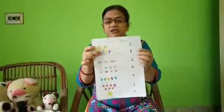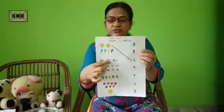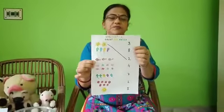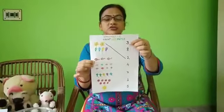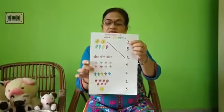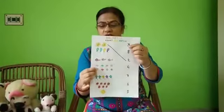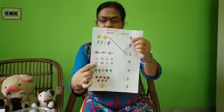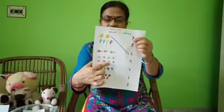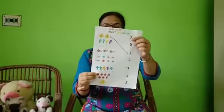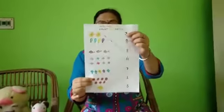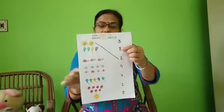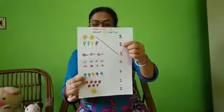Next, fish. One, two, three. Three fish. Then three is here. Next, stars. One, two, three, four, five, six, seven, eight. How many stars are there? Eight. Where is eight? Eight is here. Then we will match.